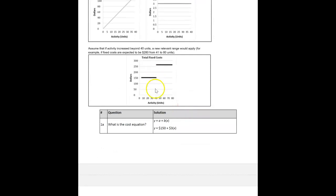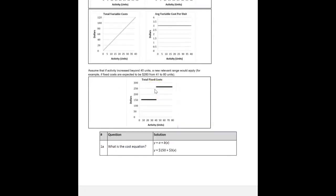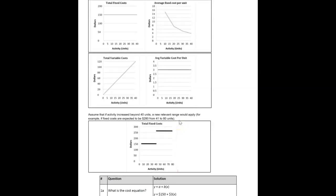And then this is a step fixed cost here. They've got a new range, they move beyond their relevant range, and if they do, they're going to have another big hunk of fixed costs. You know, maybe they've got to rent equipment or rent a building or something like that.